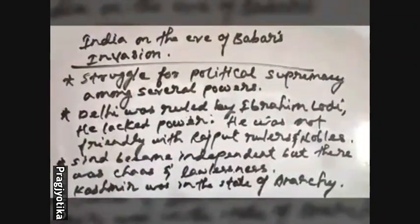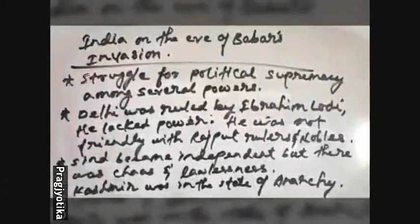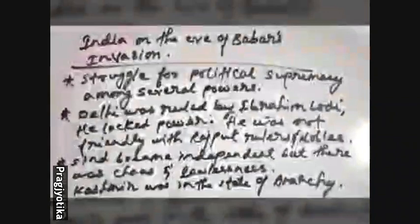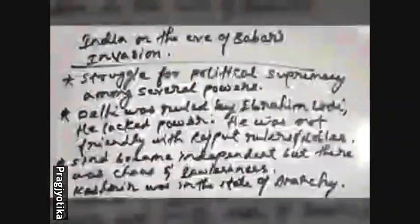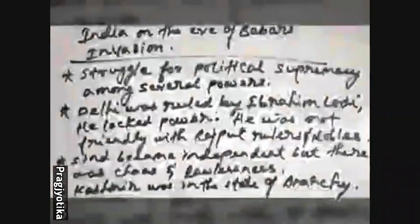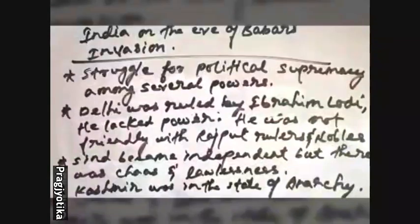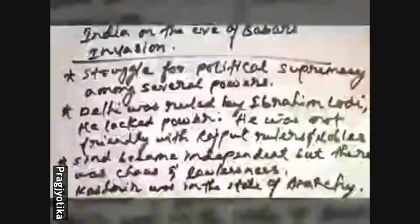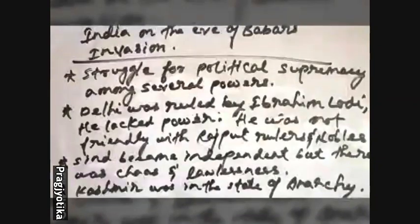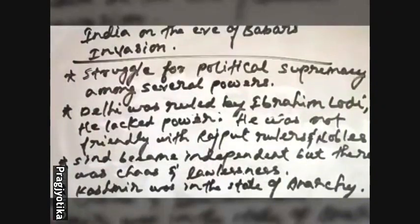Sindh was a province that had become independent from the Delhi Sultanate, but there was no central authority to control it. As a result, there was complete chaos and lawlessness in Sindh. Kashmir was also in a state of anarchy — there was no one to rule and there was complete lawlessness. This was the condition of India on the eve of Babur's invasion.